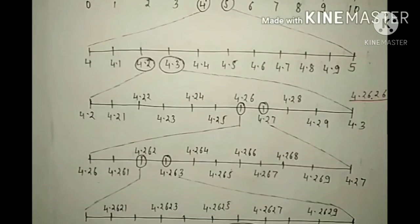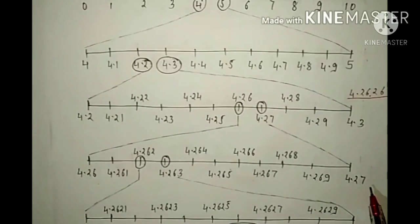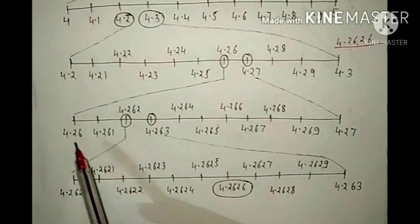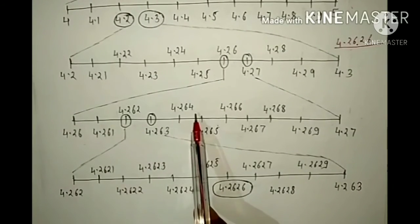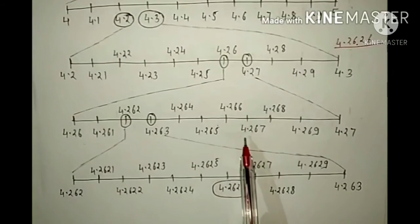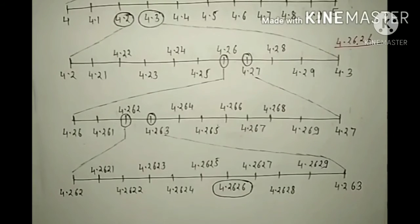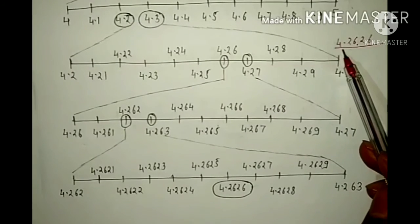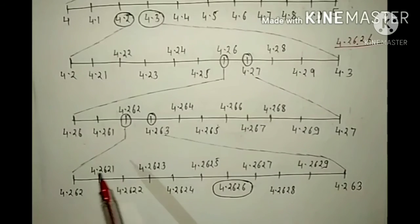So mark these two numbers 4.26 and 4.27. Now below that make another number line. Write 4.26 in the left corner and 4.27 in the right corner. Write the middle numbers: after 4.26 comes 4.261, 4.262, 4.263, 4.264, 4.265, 4.266, 4.267, 4.268, 4.269. Our number 4.2626 is greater than 4.262 and less than 4.263.